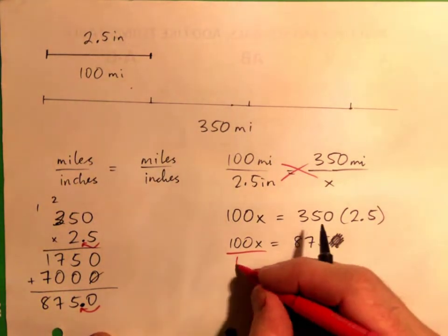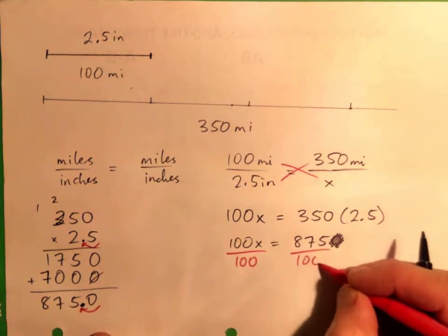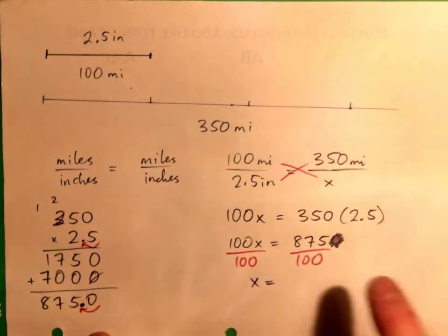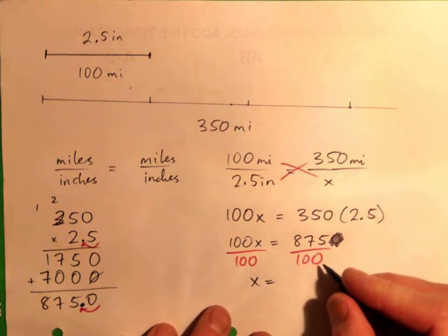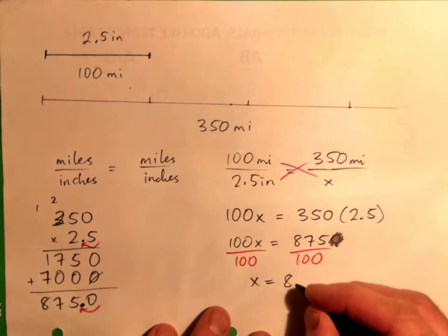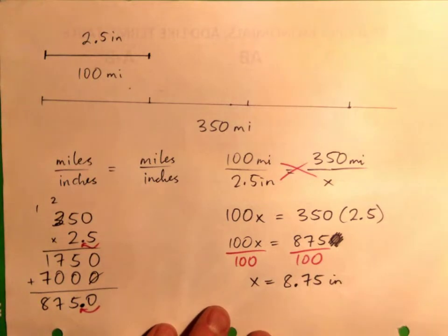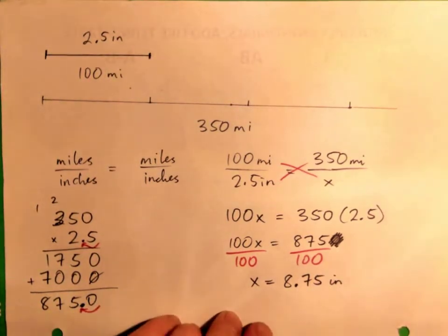So then divide by 100, and so we get, see, x is being multiplied by 100, so we need to divide by 100. And you get 8.75 inches, right?